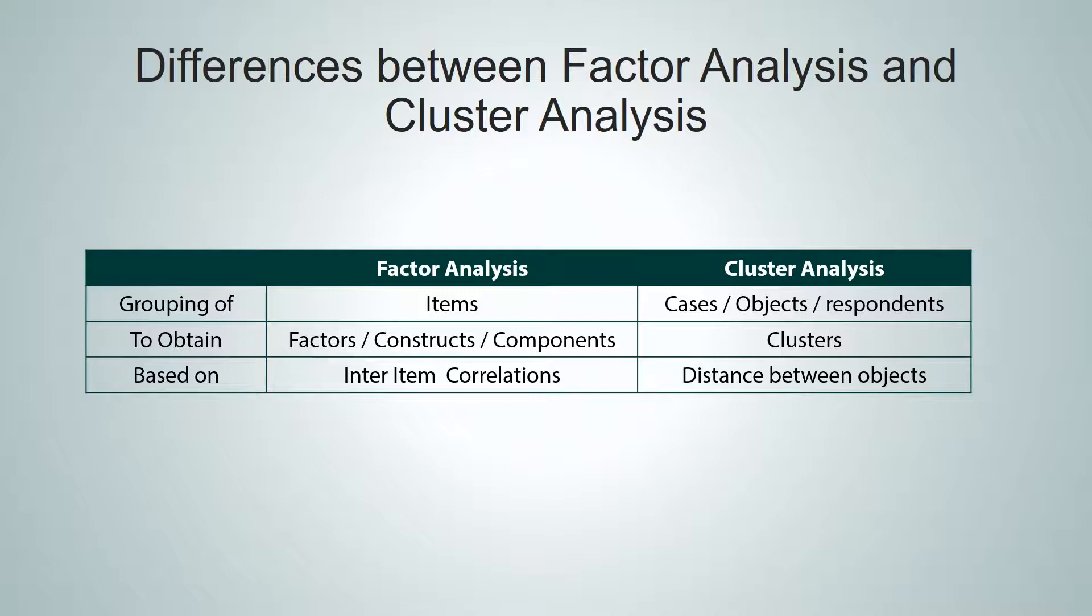And the grouping in cluster analysis is done based on the distance between the objects. Whereas the grouping in factor analysis is done based on the inter-item correlations.